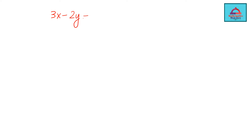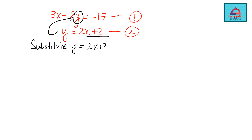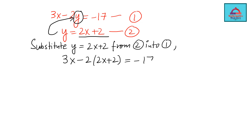Let me write the problem again. The first equation is 3x − 2y = −17, and the second equation is y = 2x + 2. From the second equation we substitute into the first: wherever there is variable y, we plug in 2x + 2. So we get 3x − 2(2x + 2) = −17. Using the distributive property with the negative sign, we change the signs of the bracketed terms.